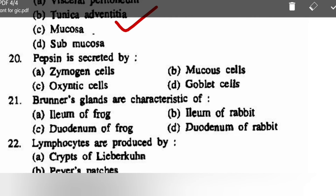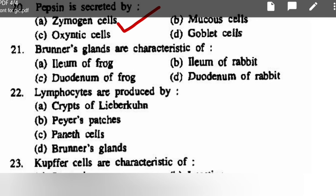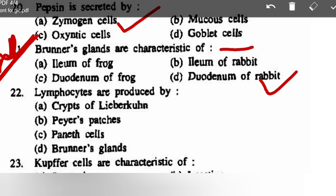Pepsin is secreted by: zymogen cells, mucosa, oxyntic cells, or goblet cells — correct option is zymogen cells. Brunner glands are a characteristic feature of — this is a most important question — the duodenum of rabbit. Correct option is duodenum of rabbit; Brunner glands are its characteristic feature.